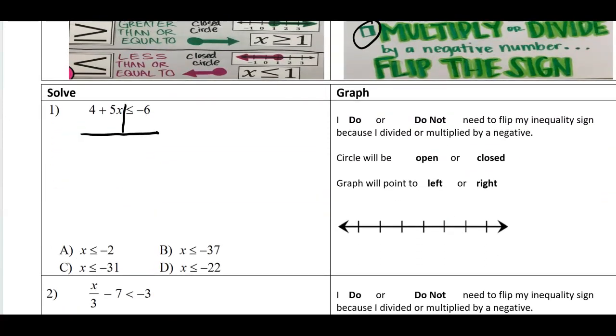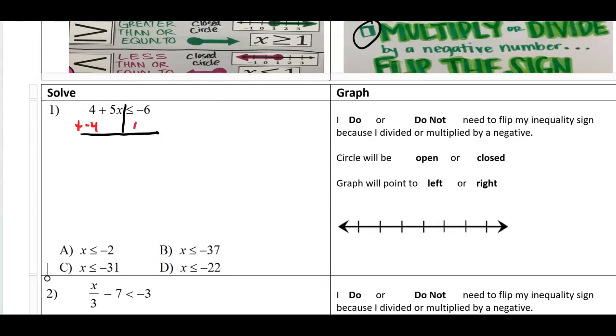Draw your scales just as right here. I'm going to add negative 4 to start because I want that to be 0. I drop down 5x. 5x is less than or equal to, keep the sign exactly the same, negative 10. And then divide by 5. I'm dividing by a positive 5. Therefore, I don't flip my sign.